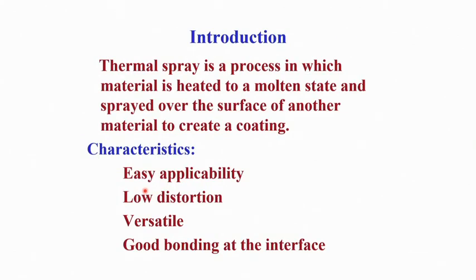Thermal Spray Deposition is a category of processes in which a material is heated to a molten state and then spread over the surface of another substrate to create a coating. This technique is in between weld overlaying and hot dipping. In hot dipping you melt the material and deposit it by dipping the substrate into the molten metal. In weld overlaying you apply a high power heat source to melt the material and apply it on the sub-surface of the substrate.